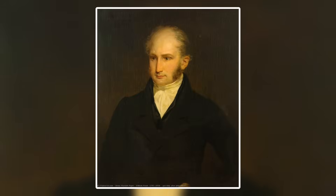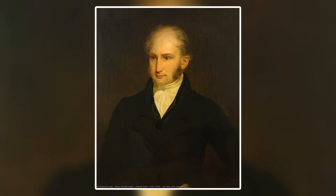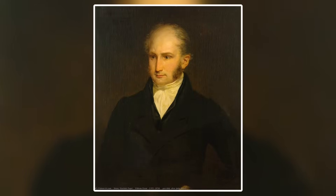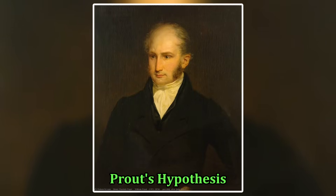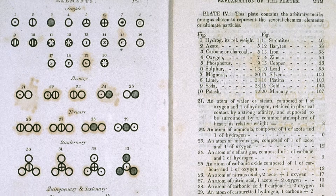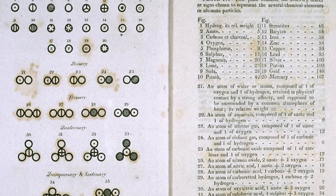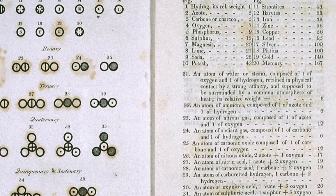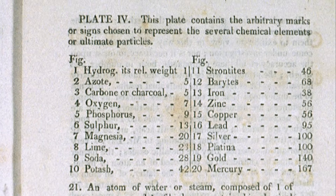Between the years of 1815 and 1816, an English chemist by the name of William Prout published two papers in which he brought forth what is known today as Prout's hypothesis. This hypothesis was built upon the foundation of a budding field of modern atomic theory headed by John Dalton, in which he proposed a series of fundamental indivisible elements as well as their atomic weights relative to hydrogen. Prout observed Dalton's ideas and noticed that every element heavier than hydrogen seemed to be heavier by some whole integer amount.